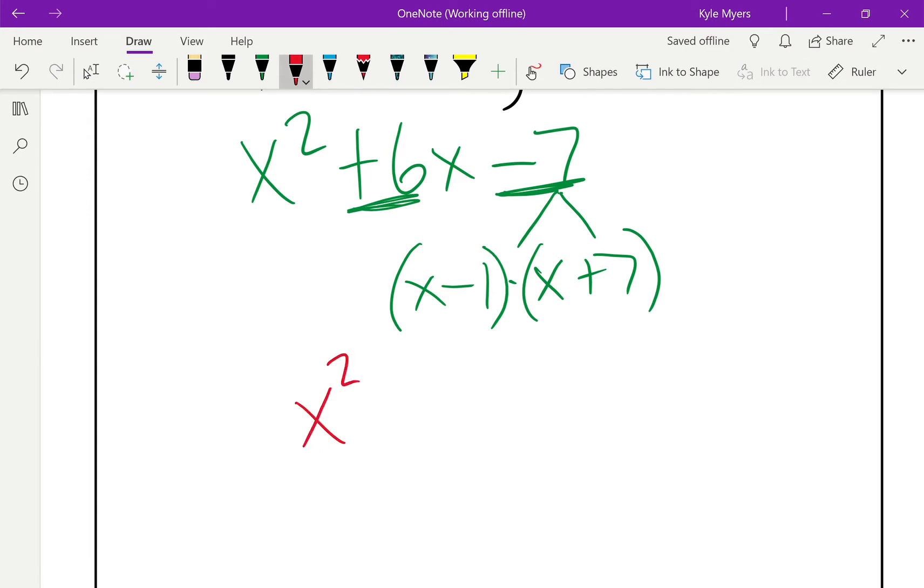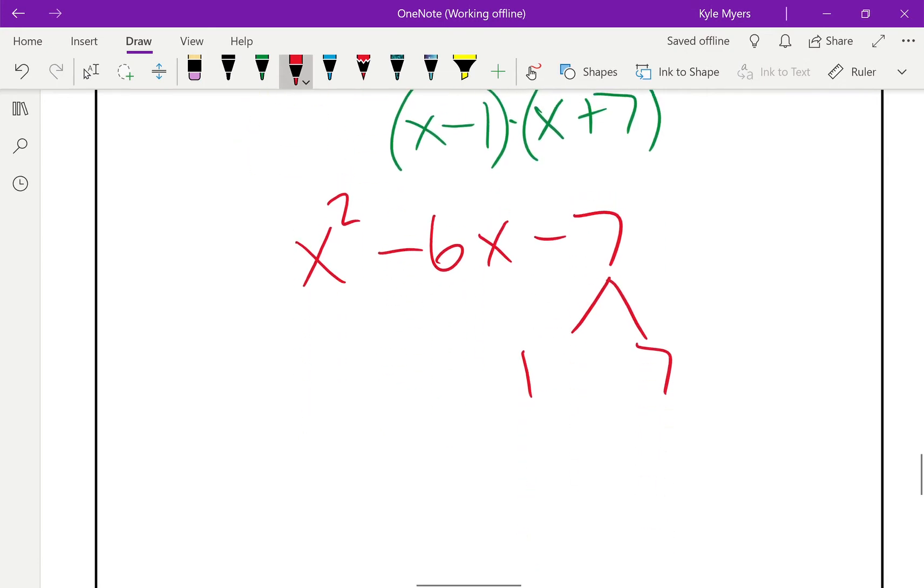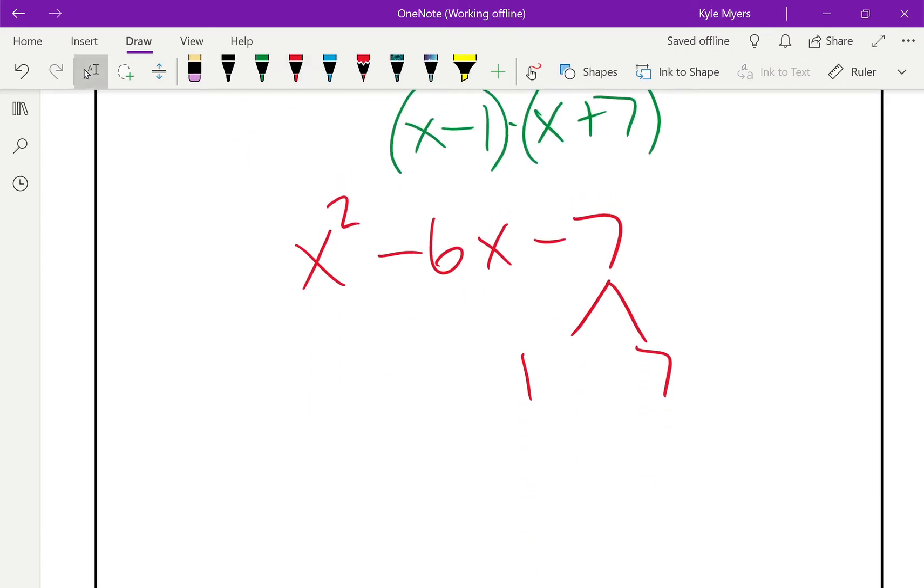So x² - 6x - 7. Same thing, got one and seven, one of them has to be negative. Not both, not neither, because I have to get a negative seven when I multiply. A positive and a negative I get a negative. So this time I'm going to make the seven negative because if I do then I'll get a negative six when I subtract. So (x + 1)(x - 7), and then I'm done.